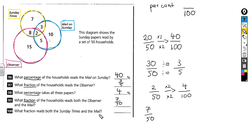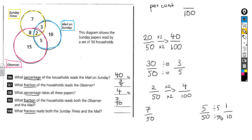What fraction reads both the Sunday Times and the Mail? The Sunday Times is yellow and the Mail is blue. We find how many people are in both those circles — that's 5 households, so 5 out of 50. We can simplify by dividing both top and bottom by 5: 5 divided by 5 is 1, and 50 divided by 5 is 10, giving one tenth. This is a set of 50 equal-sized pieces, which is why we express the fraction over 50.